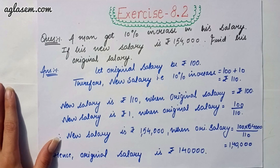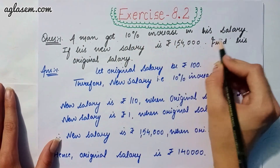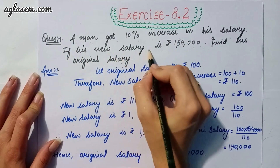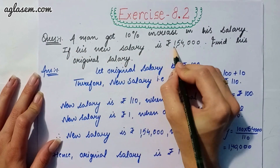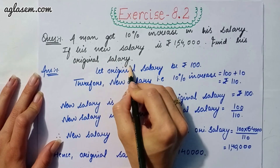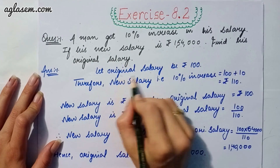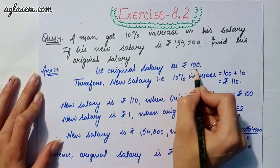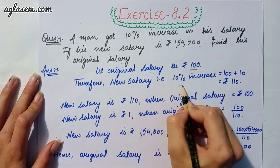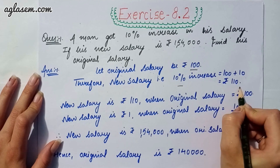Our first question says: a man got a 10% increase in his salary. If his new salary is 154000, find his original salary. First of all, we take the original salary as 100. Therefore the new salary, with a 10% increase, is 100 plus 10, that is rupees 110.